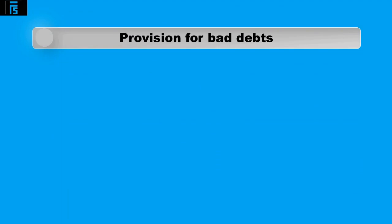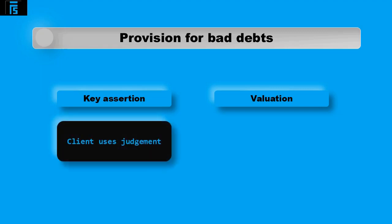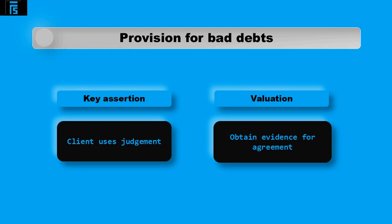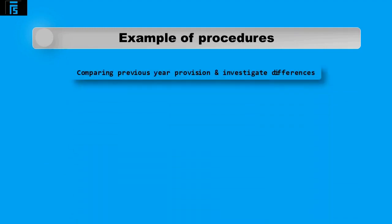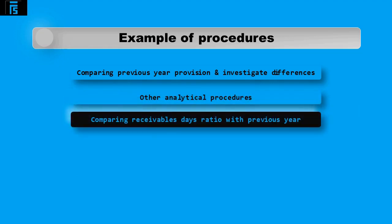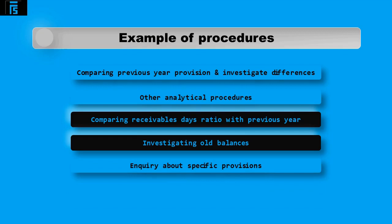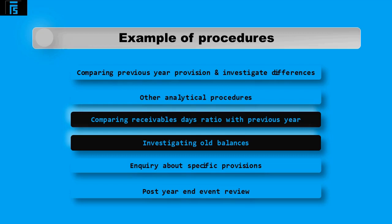The provision for bad debts must also be audited. Like any estimate, this is difficult to audit as there is little external evidence. The key assertion to verify is valuation. The provision has been created by the client using their own judgement, so the auditor must obtain evidence. Procedures include comparing the provision to the previous year, analytical procedures such as calculating the receivable days ratio, reviewing the aged receivables list and investigating old balances, inquiry with management about specific provisions, and post-year-end event review to see if customers have paid or are unable to repay.